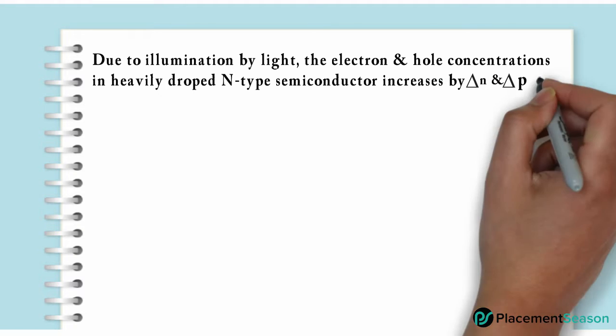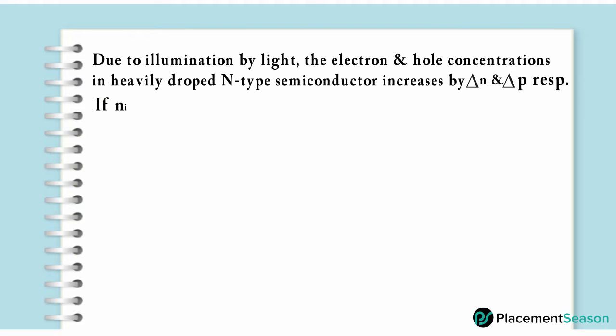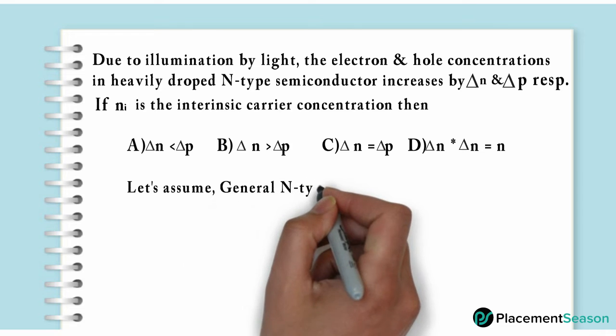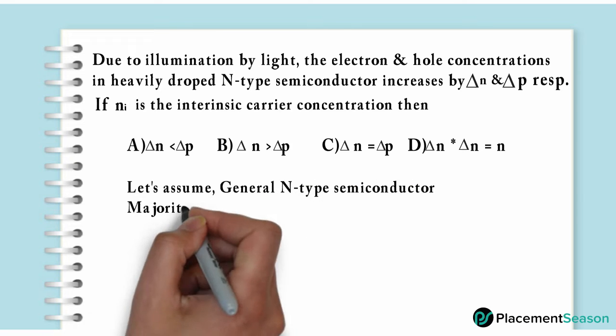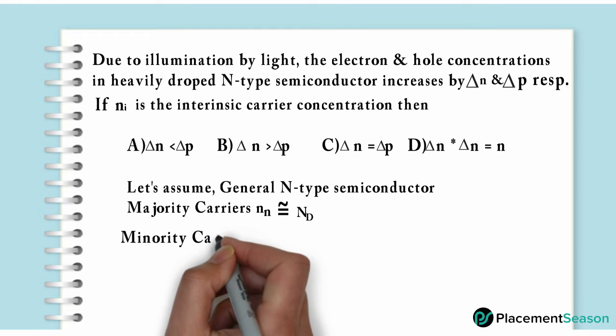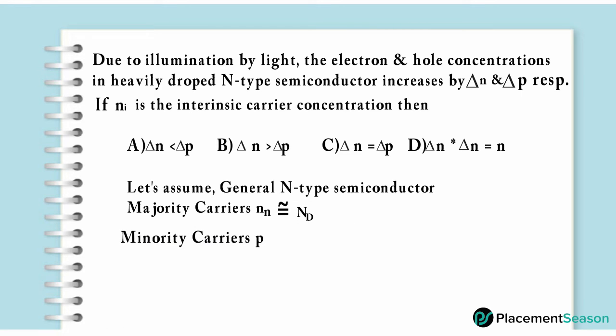by ΔN and ΔP respectively. If n_i is the intrinsic carrier concentration, then what will be the correct option? Given the semiconductor is n-type, majority carriers are electrons N_D equal to donor concentration, and minority carriers are holes equal to n_i²/N_D.